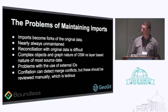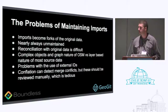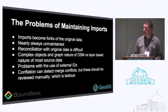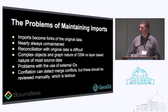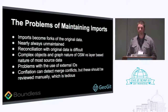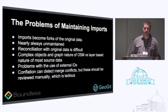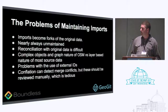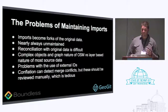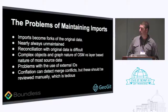The real crux issue is maintaining imports. Imports are essentially a fork of the original data. In the entire history of OSM, there are very, very few examples of people maintaining import updates over time — they do an import and it's nearly always unmaintained. That's often because reconciliation with the original data is difficult, given the complex objects and graph nature of OSM versus the layer-based data of most source data.